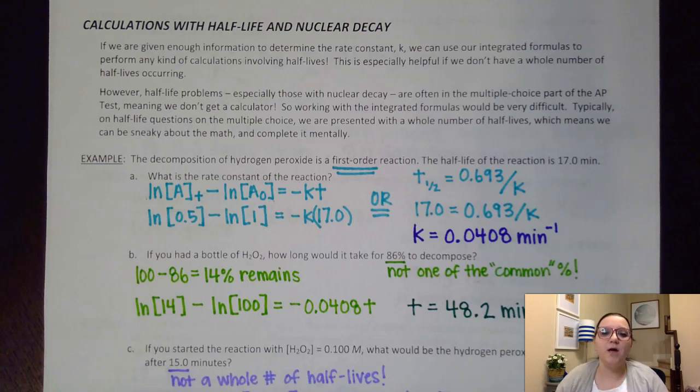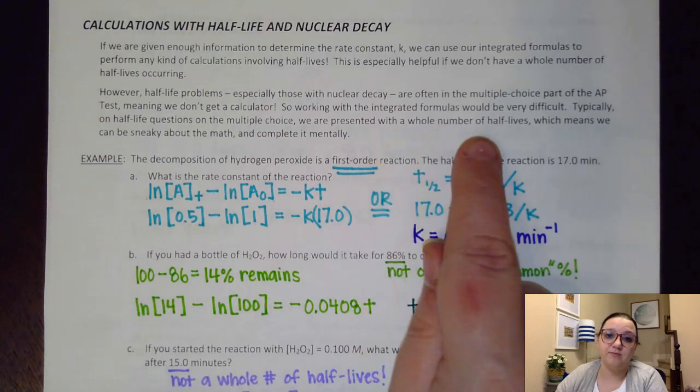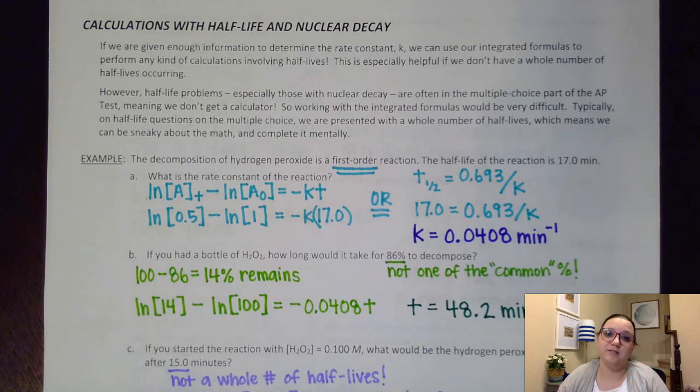However, sometimes we're trying to do these problems on the multiple choice part of the AP test, meaning we don't have a calculator. Also, we may not have enough information to solve our rate constant K. Typically, if you see any kind of nuclear decay question, which we know is first order, we can do the math with a sneaky mental math method because we're going to be presented with a whole number of half-lives.